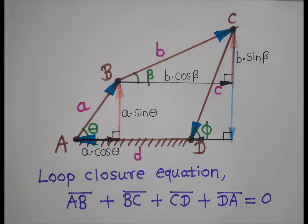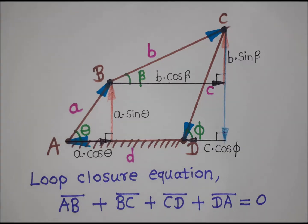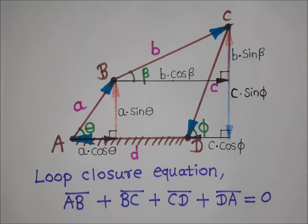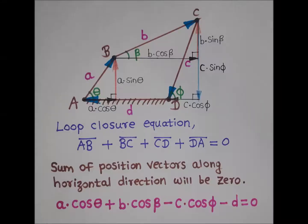Similarly, vector CD can be resolved into two components. By observation, the horizontal component is directed to the left, and the vertical component is directed downward. The horizontal component of CD is C·cos(phi) and the vertical component is C·sin(phi). Vector DA is along the horizontal direction, directed to the left.